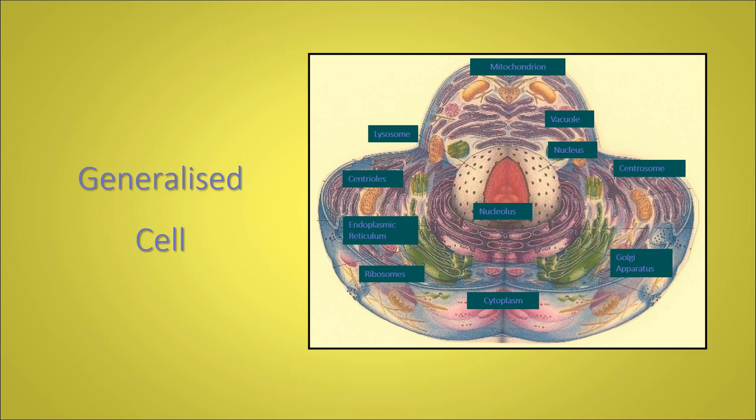Golgi apparatus, centrosomes, centrioles, nucleus, nucleolus. These are the names of the organelles within the cell that you need to be familiar with. You need to be familiar with their name and what they do, briefly what they do.